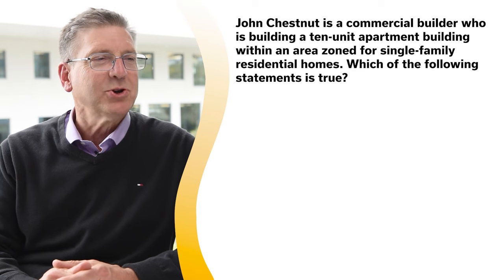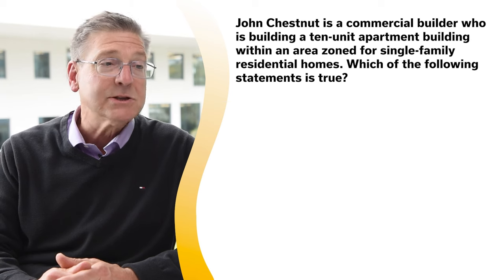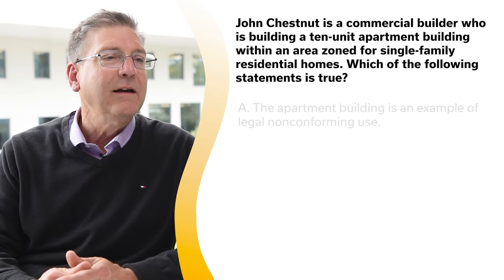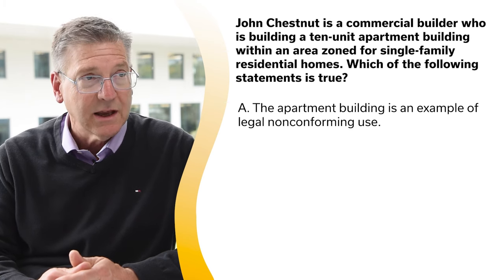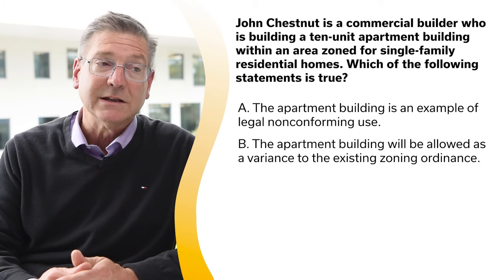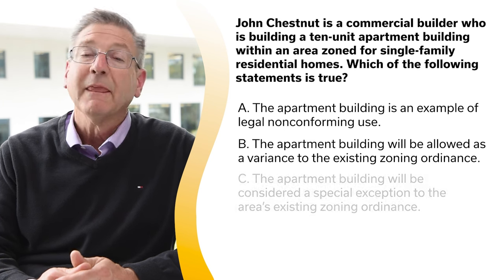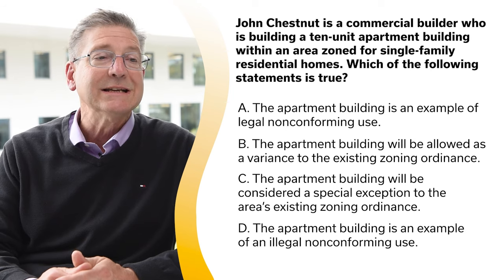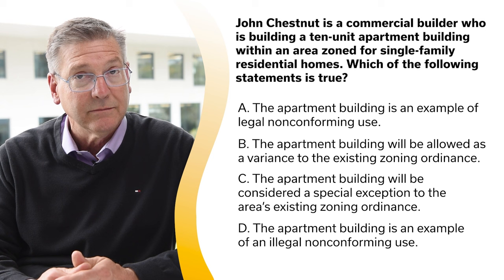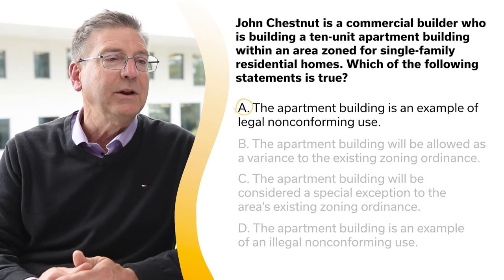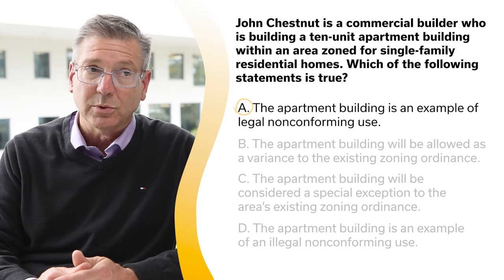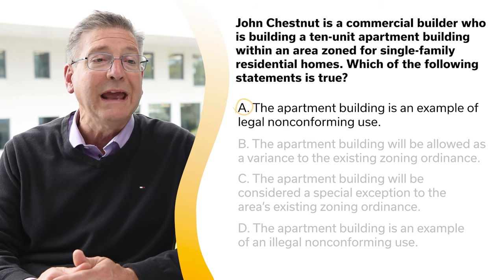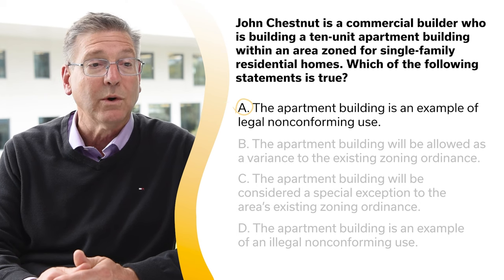John Chestnut is a commercial builder building a 10-unit apartment building within an area zoned for single-family residential homes. Which of the following statements is true? A, the apartment building is an example of legal non-conforming use; B, the apartment building will be allowed as a variance to the existing zoning ordinance; C, the apartment building will be considered a special exception to the area's existing zoning ordinance; or D, the apartment building is an example of an illegal non-conforming use. The correct answer is A — the apartment building is an example of legal non-conforming use. When John builds the apartment building in an area strictly zoned for single-family residential homes, the apartment building will be an illegal conforming use that conflicts with the single-family residence ordinance currently in place.